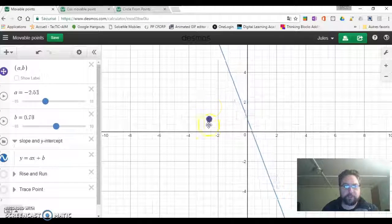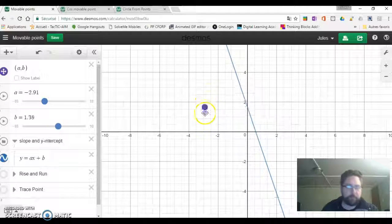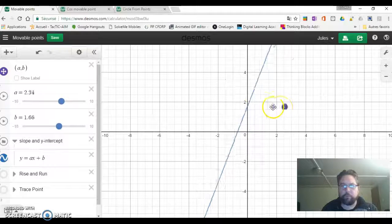If I change my B, which is the y-coordinate but in this case the y-intercept, and what happens when we move the A?